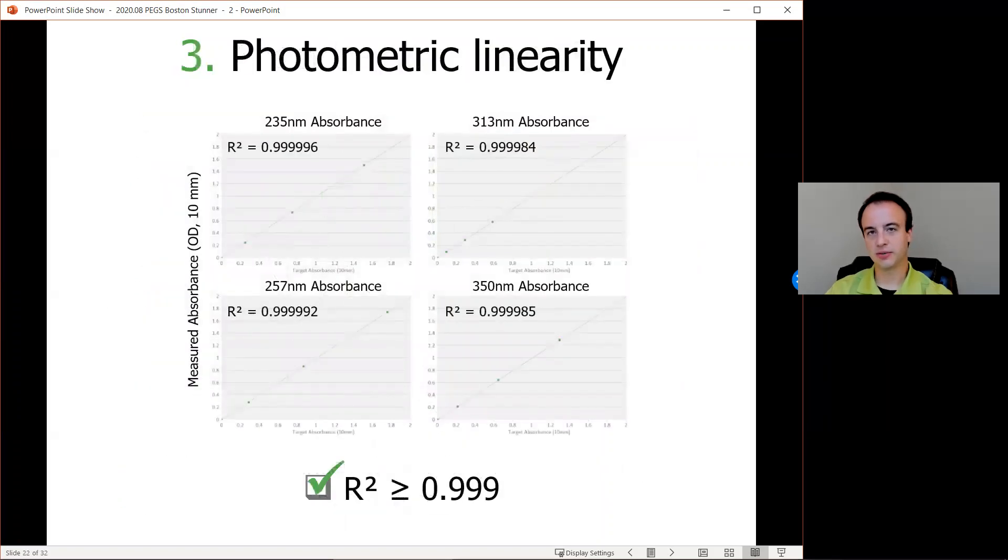And lastly, looking at photometric linearity, we can look at a linear regression of the means of the six replicate measurements at each tested wavelength of those UV-20, UV-60, and UV-120 standards plotted through zero and confirm the R-squared values greater than 0.999.